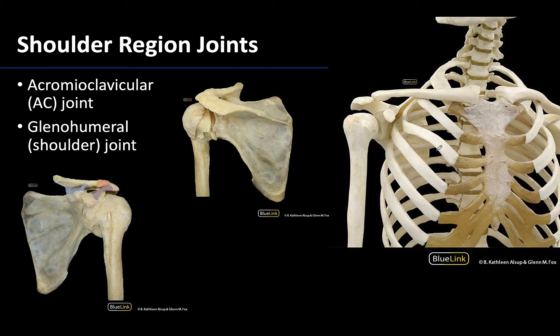Starting in the shoulder region, there are two joints to get familiar with, beginning with the more proximal one: the acromioclavicular joint. This is where the acromial end of the clavicle articulates with the acromion of the scapula, forming the AC joint. It's an easier one to locate — you can palpate your clavicle and continue laterally until you reach a bump, and you are at the acromioclavicular joint.